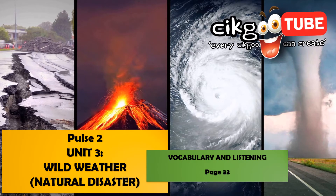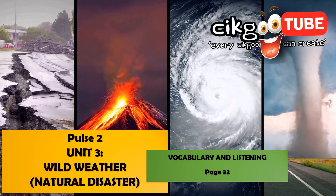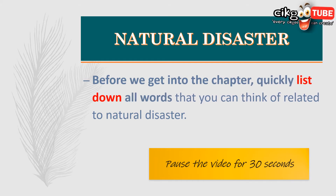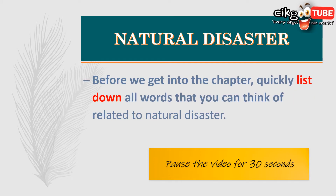Hello girls! Today we are going to learn Pulse 2, Unit 3: Wild Weather. Our topic for today will be on natural disasters, and the skills we are going to practice are vocabulary and listening. You can refer to your Pulse 2, page 33. Before we get into the chapter, quickly list down all words you can think of related to natural disasters. Pause the video for 30 seconds and then resume once you have your list ready.